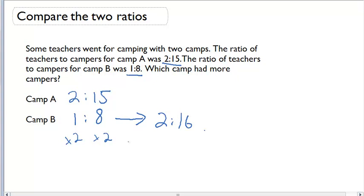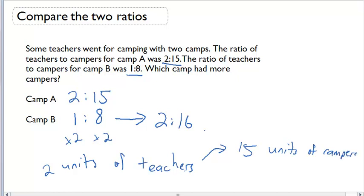Now that I have these in the same terms, I can compare them. Camp A and camp B both have 2 units of teachers, so they have the same units of teachers. We don't know how many teachers there are, but they have 2 units of teachers. Now we can compare: camp A has 15 units of campers and camp B has 16 units of campers.